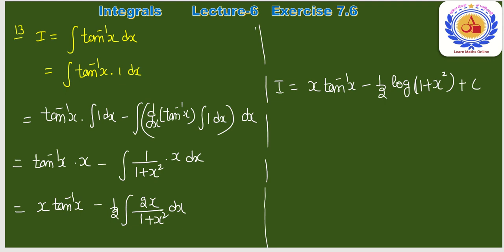Question number 13: ∫tan⁻¹(x)dx। एक ही function है। Inverse trigonometric function को first function लेते हैं, second function 1 के साथ multiply करते हैं: ∫tan⁻¹(x)·1 dx।